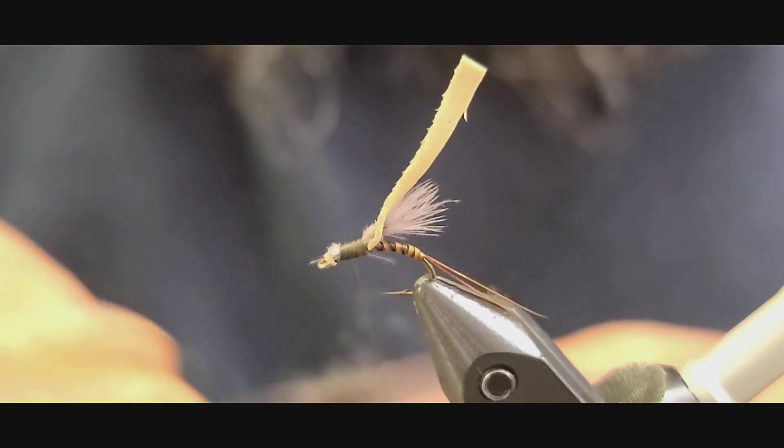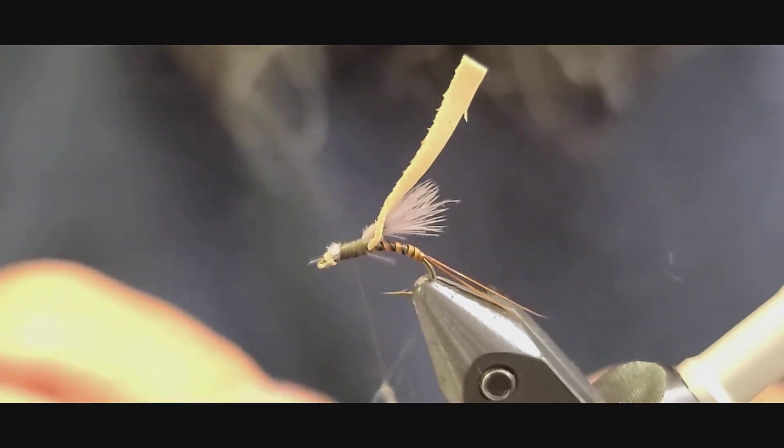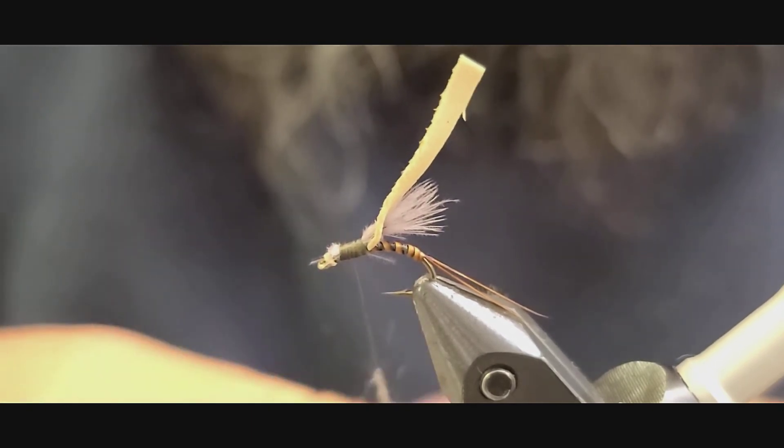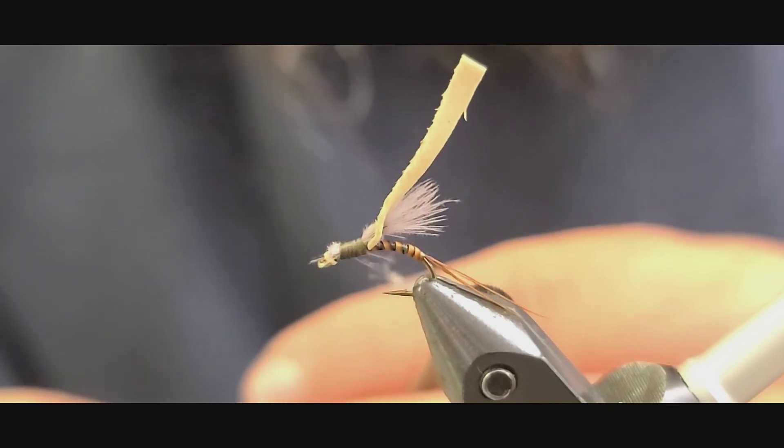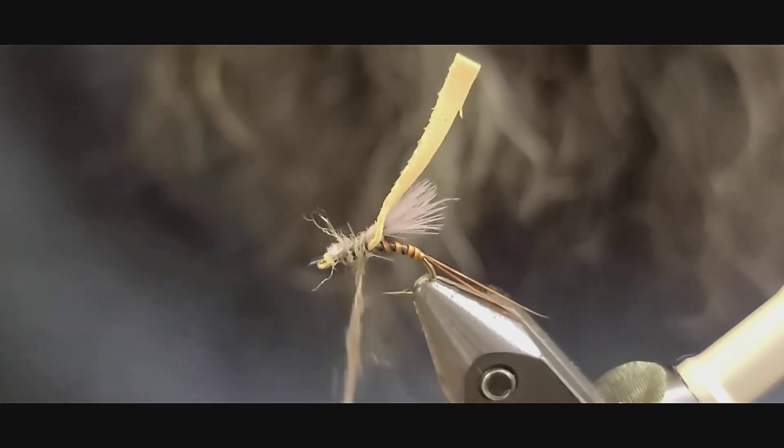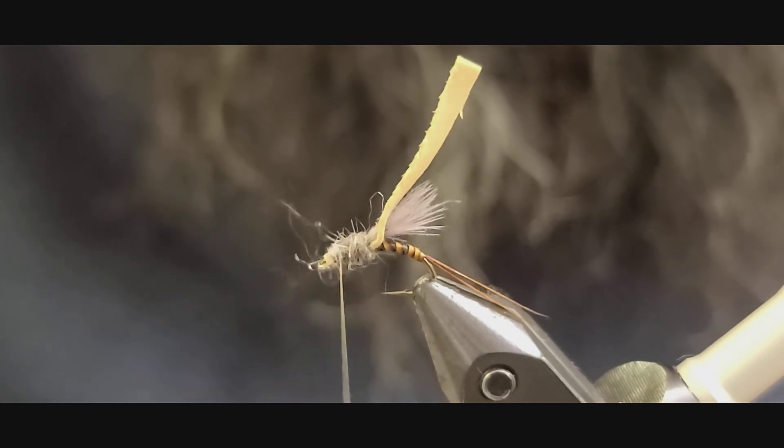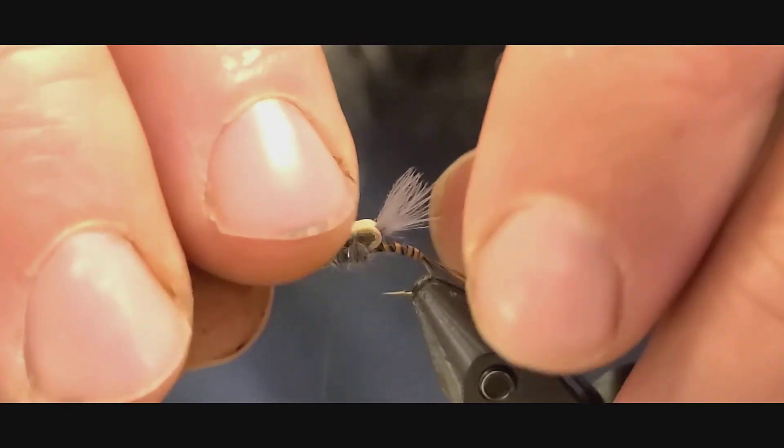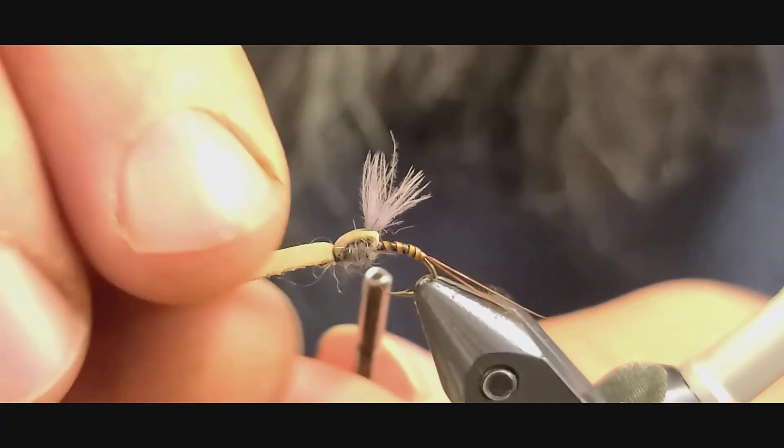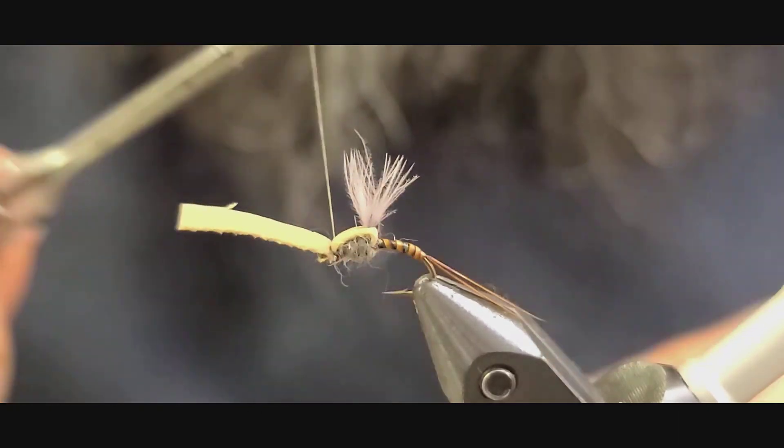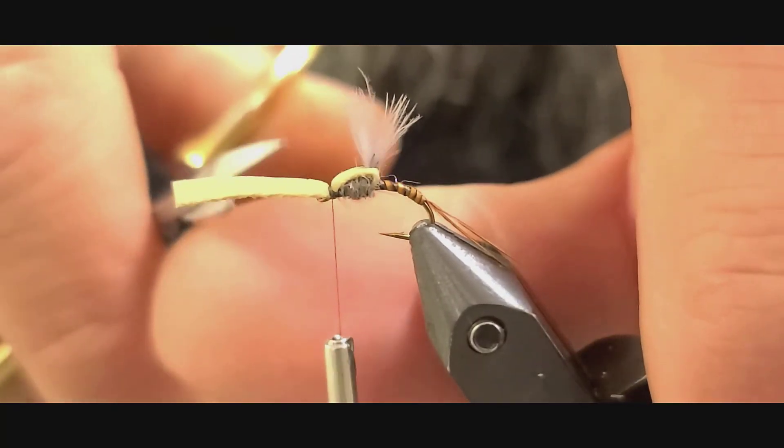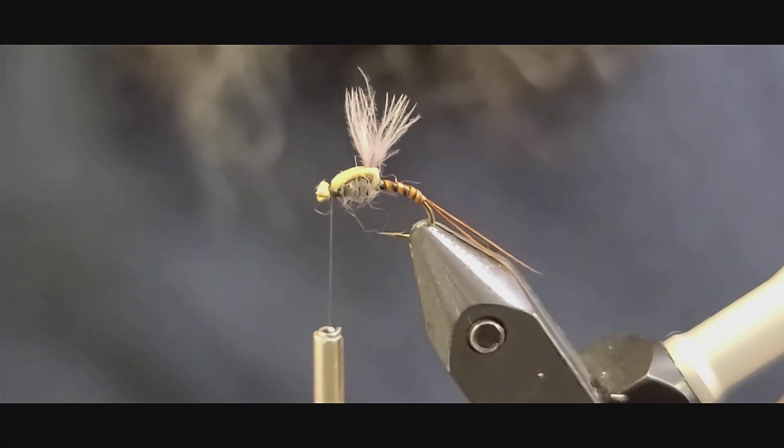Take a little bit of gray SLF squirrel dub here. I'm going to take this foam, pull it forward, take one loose wrap maybe two, and then we're going to stretch that good. Clip off our excess.